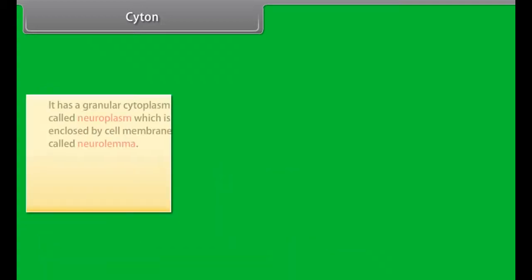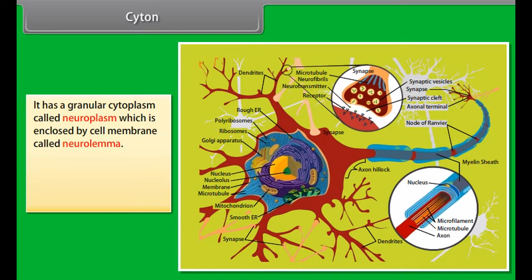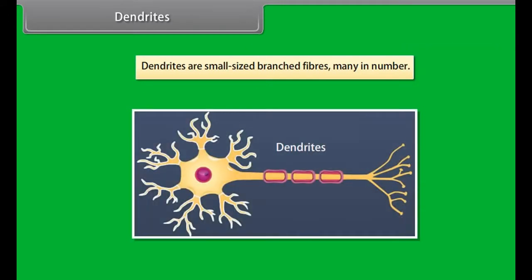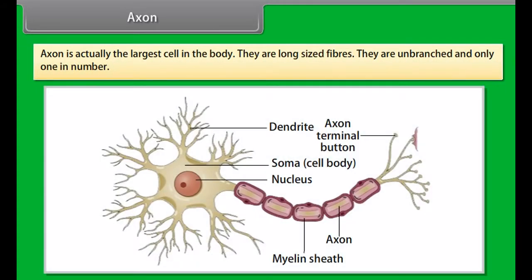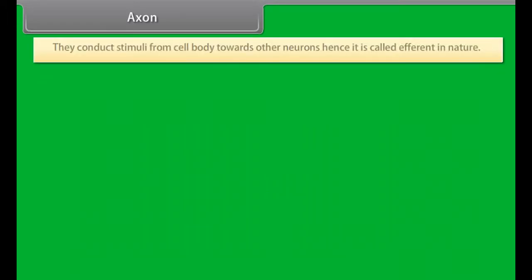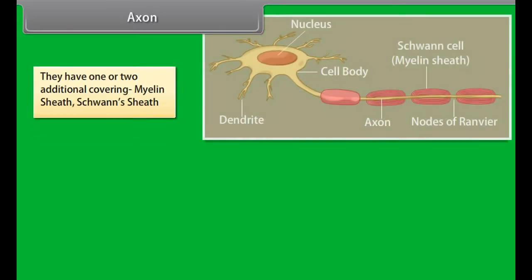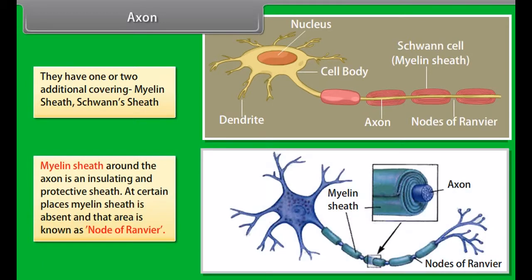The units which make up the nervous system are called nerve cells or neurons. A neuron is the functional and structural unit of the nervous system — a nerve cell with all its branches. It is the longest cell in the human body, about 100 cm long. A neuron is formed of three parts: cytone, dendrites, and axon. The cytone is a typical animal cell structure containing cytoplasm and a nucleus, spherical in shape and about 4 to 135 micrometres, with granular cytoplasm called neuroplasm enclosed by a cell membrane called neurolemma.